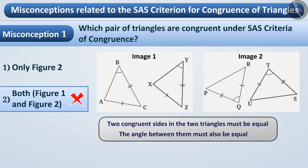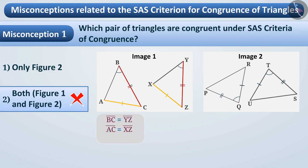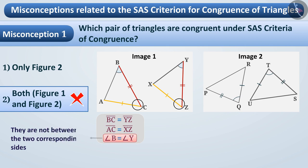Only then can we say that those two triangles are congruent. The corresponding arms in the first figure are equal, but no information is given about the angle between them. In this figure, angle B and angle Y are equal, but they are not the angle between the two corresponding sides. Therefore, the SAS criteria cannot be used here.